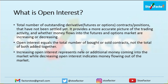Open interest equals the number of bought or sold contracts, not the total of both added together. Open interest is the total number of contracts which are bought or sold. Increasing open interest represents newer additional money coming into the market, and decreasing open interest means money is flowing out. Now let's understand how open interest is calculated using a simplistic example.